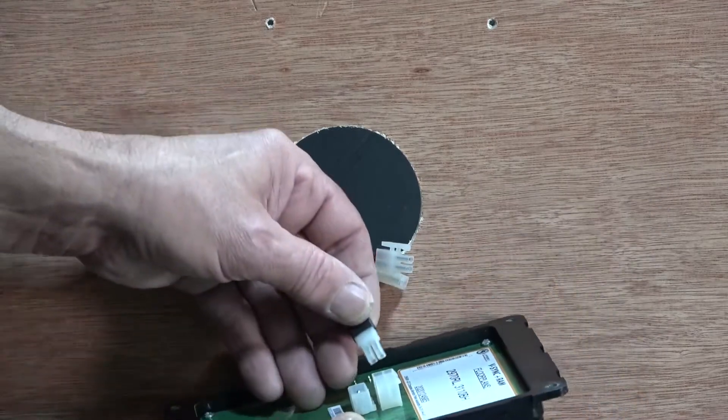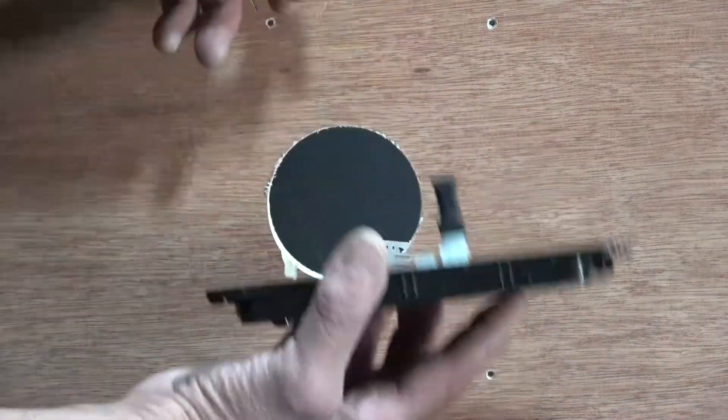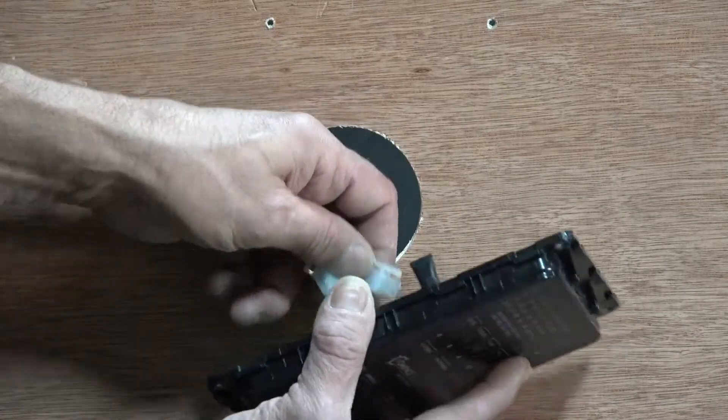Make sure the part number on the old touchpad matches the new one and begin plugging in the CAN bus wires and then the power connection.